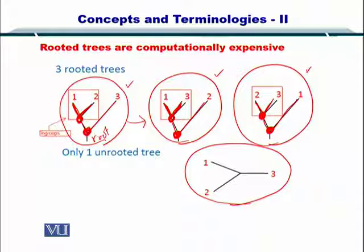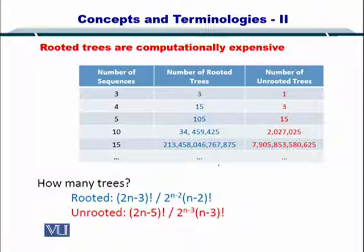But if you look at the unrooted tree, it can represent this entire information by using just this simple tree. So therefore, rooted trees are computationally expensive. As you increase the number of sequences, as shown here in this table, the number of rooted trees increases very fast.